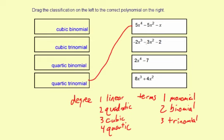Look at this next one. The degree is 3, which means you have a cubic. Then you have one, two, three terms, which means trinomial. You have a cubic trinomial for this one.